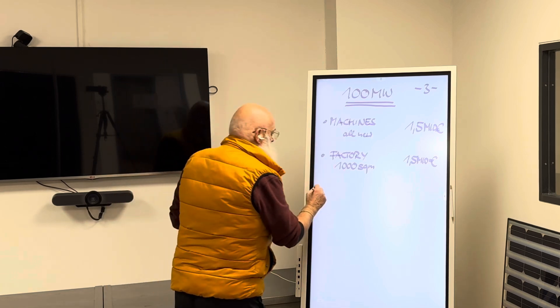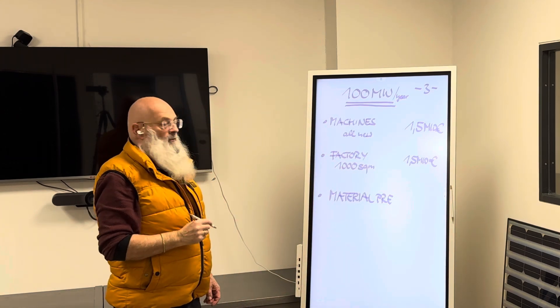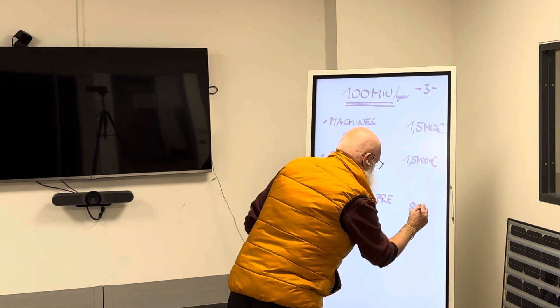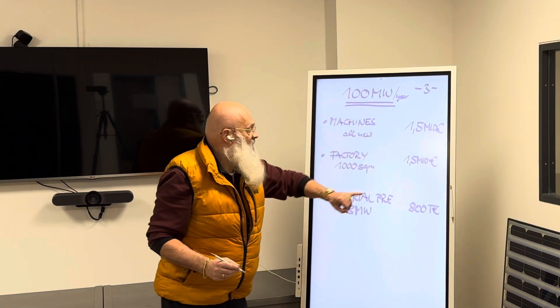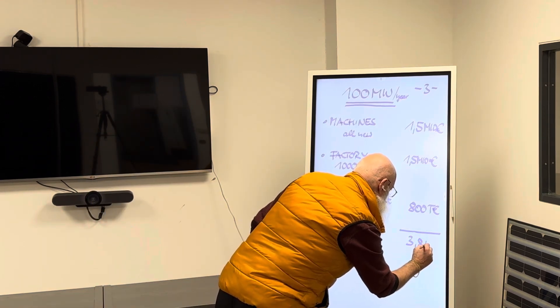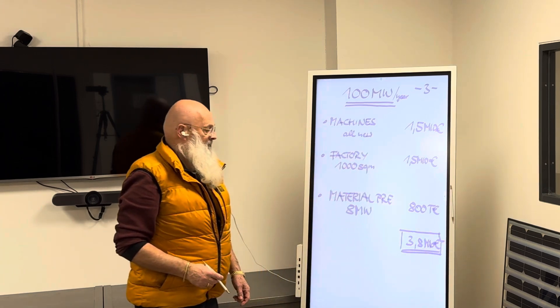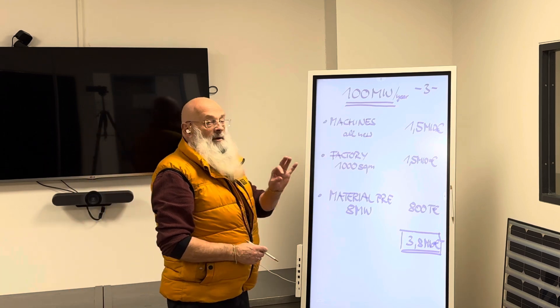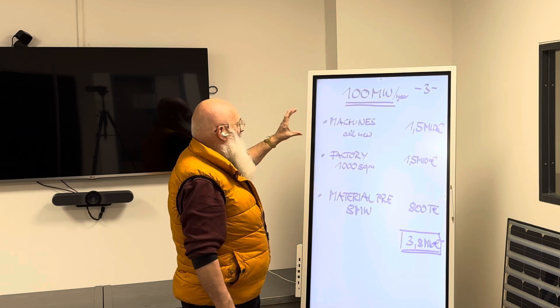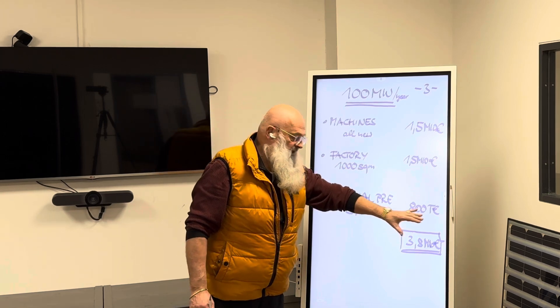The next position is the material. We are always calculating the production capacity for one complete year, which means 8 megawatt pre-financing. This is not a big issue compared to the factory and machinery prices. The total price of this is 3.8 million euro. This is a very good example of a medium size factory for 100 megawatt per year modules.